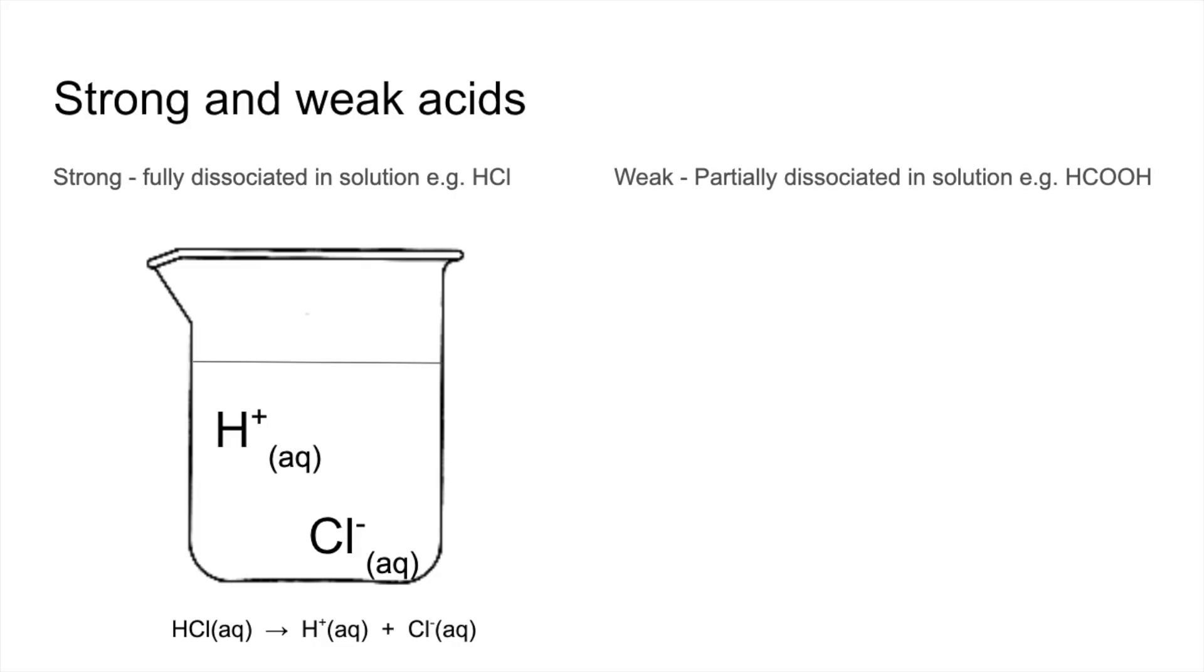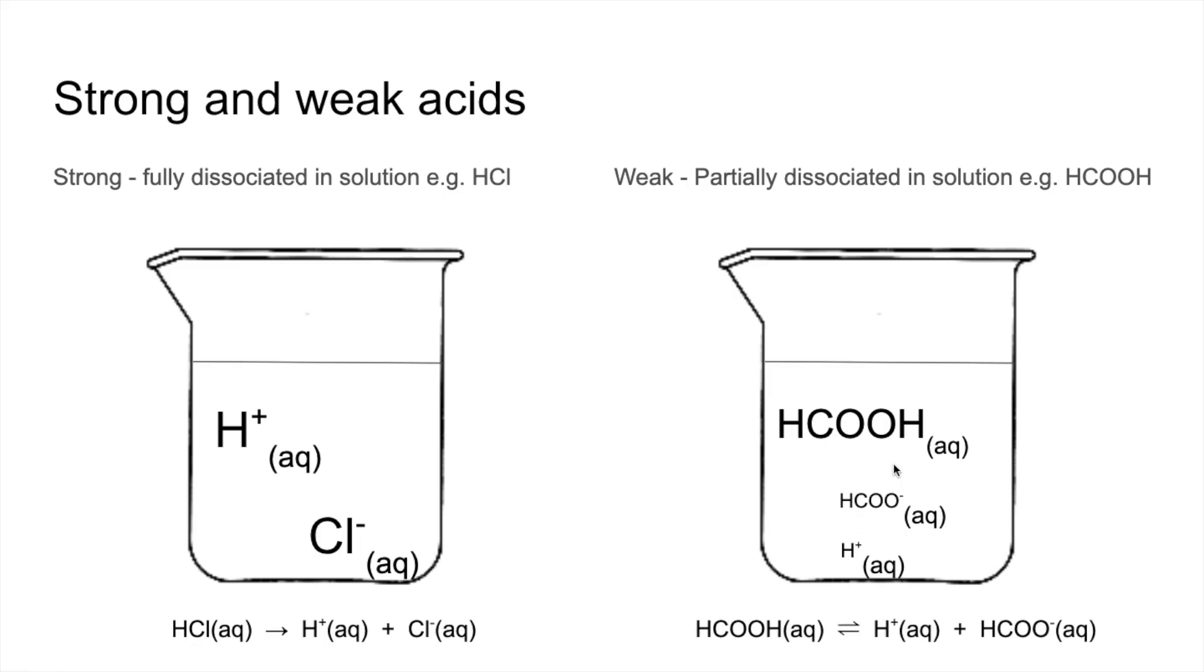Weak acids now, they're partially dissociated in solution so I'm using methanoic acid as the example. So if you put methanoic acid in a beaker of water it would partially dissociate. So what you'd have in there would be methanoic acid molecules, aqueous methanoic acid molecules, methanoate ions and H plus ions. And the font size I've chosen here is to show that this is hardly dissociated, so you'd have a large amount of this molecule and small amounts of these ions. We use reversible arrows to represent partial dissociation.